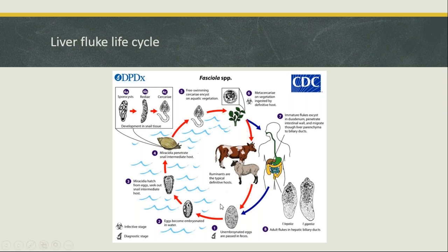If eggs land on dry ground, they will not develop. However, if deposited into a water source such as a dam overflow, a gully, or a creek, the little miracidia can hatch. These miracidia swim around in the water and seek out the snail — they must penetrate the snail and infect it within 24 hours. A lot of the time their lifespan is only a couple of hours and it's very temperature dependent.